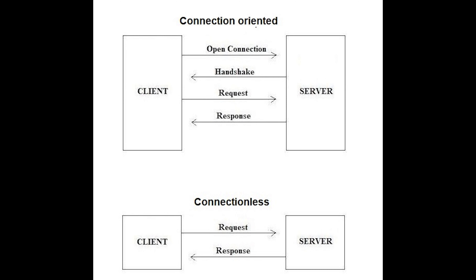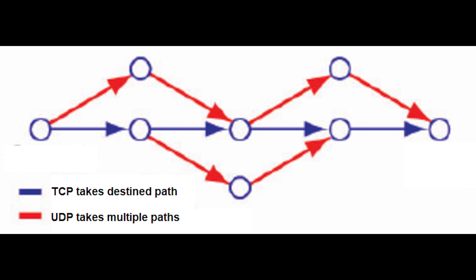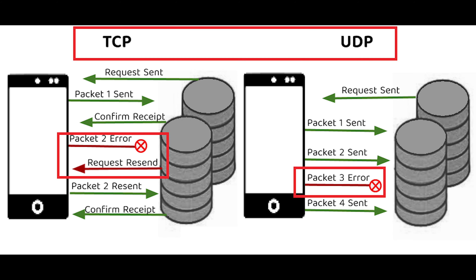Connectionless service is used in network systems to transfer data from one end to another without creating any connection. It does not require establishing a connection before sending data and is not a reliable network service because it does not guarantee the transfer of data packets to the receiver. Connectionless doesn't ensure all data is received, while connection-oriented does. Connection-oriented also ensures there's no congestion because data packets follow the same route; in connectionless, data packets can take any route.